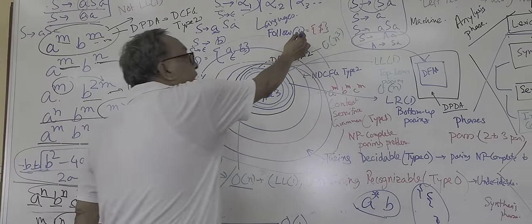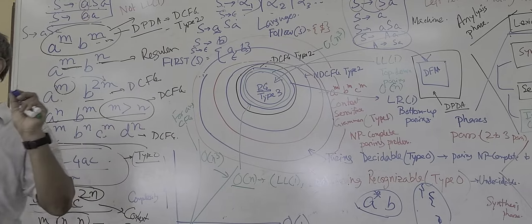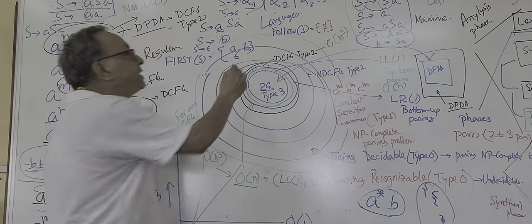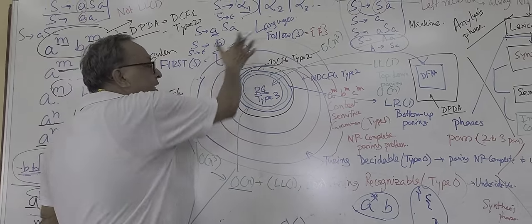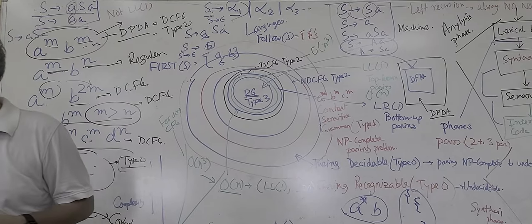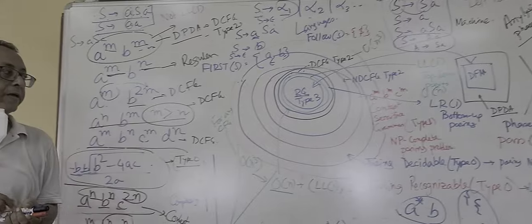Remember, follow of S will never contain epsilon. Follow of any variable will never contain epsilon, so epsilon cannot be common. There is no common, so partially this can be LL1 grammar, but we have to find it on all the rules.